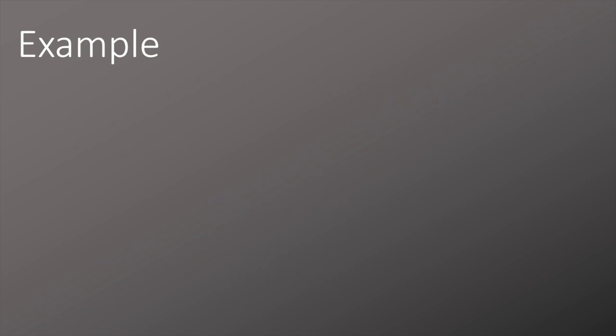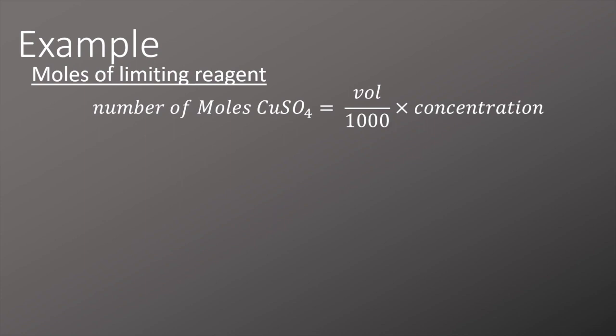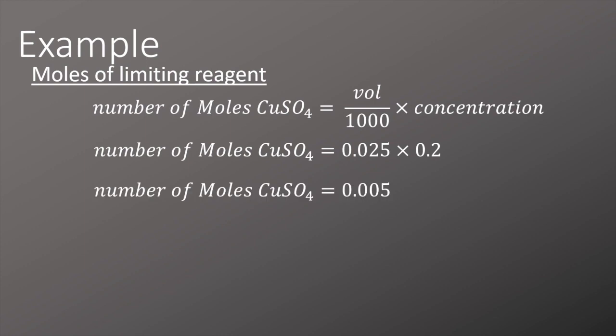We now need to work out the moles of our limiting reagent. To do this we'll use the equation number of moles equals volume divided by a thousand multiplied by concentration. Remember we're dividing volume by a thousand because we've got volume given here in centimeters cubed. We'll add in the numbers so we've got 0.025 multiplied by 0.2 to have a number of moles of 0.005. So that's the number of moles of copper sulfate. We know that that's the limiting reagent because in the question it tells us that the zinc is given in excess.